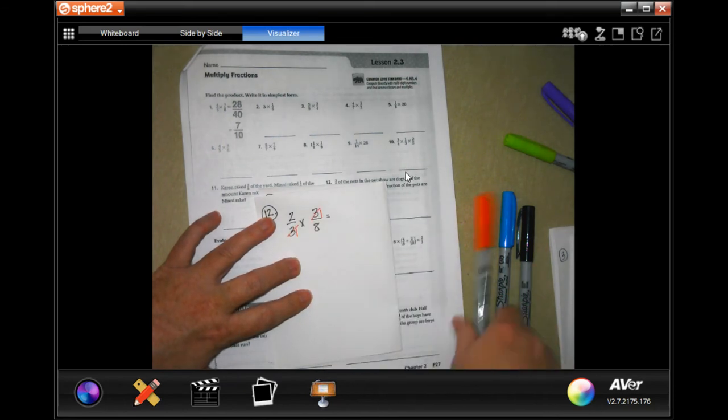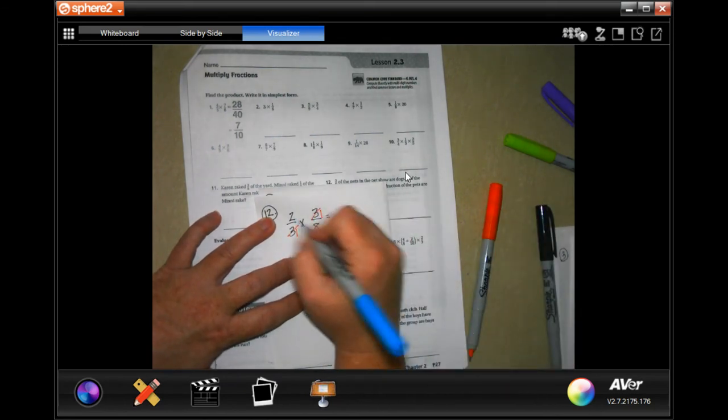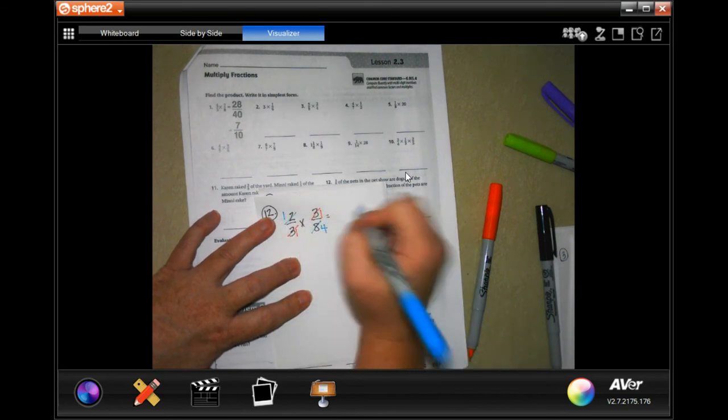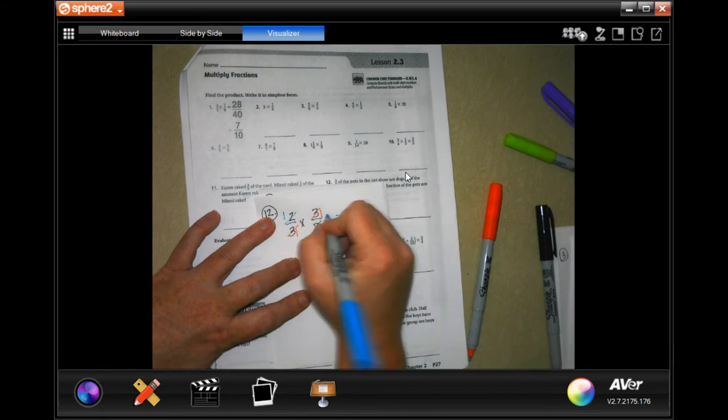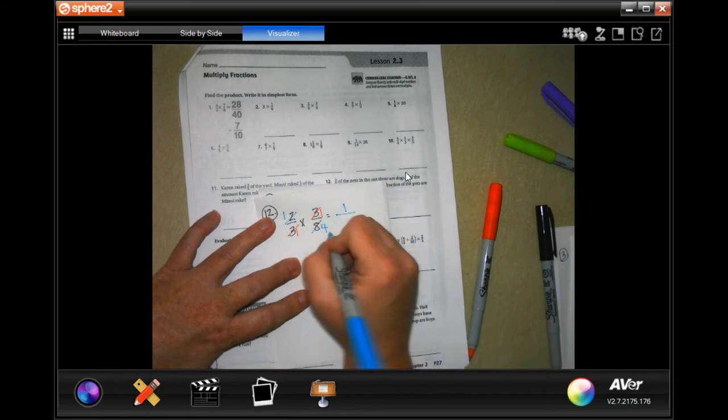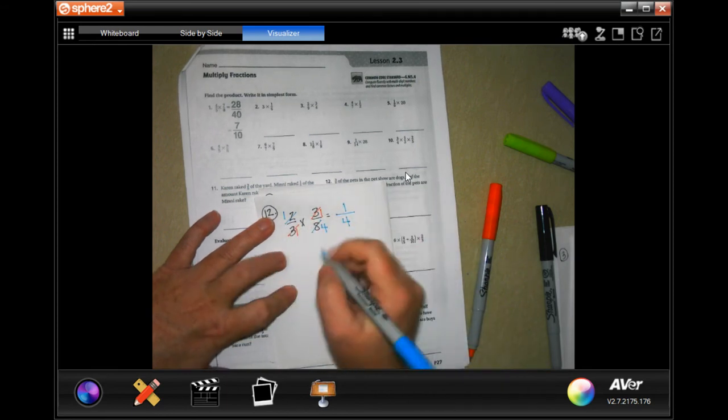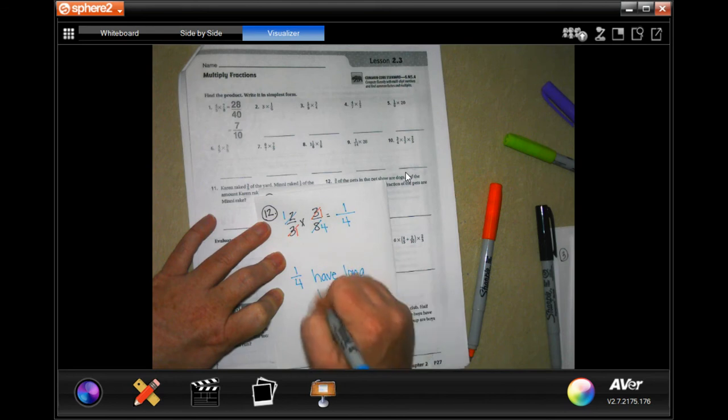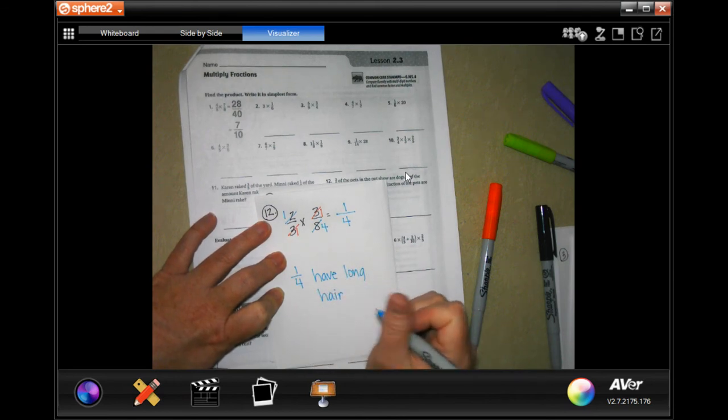Now that doesn't mean that 2 can't go into 8. So 2 goes into 2 one and 2 goes into 8 four times. Now multiply straight across. 1 times 1 is 1 and 1 times 4 is 4. So 1/4 have long hair, or you can put dogs with long hair.